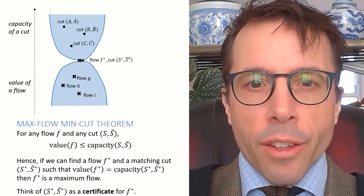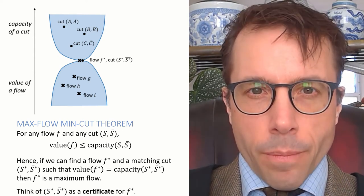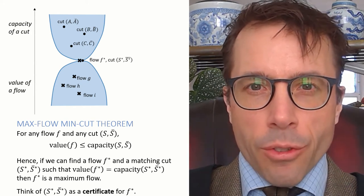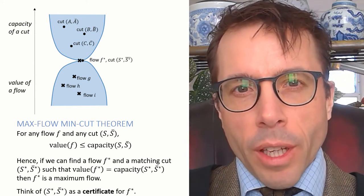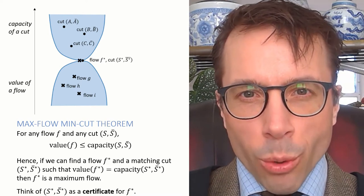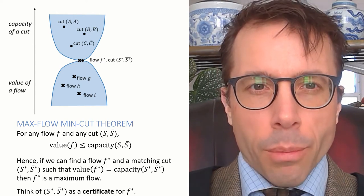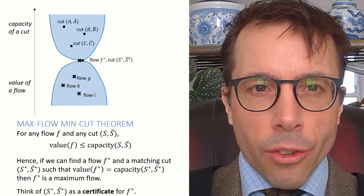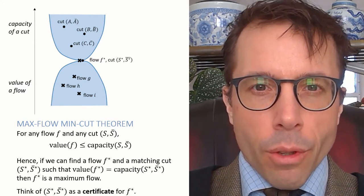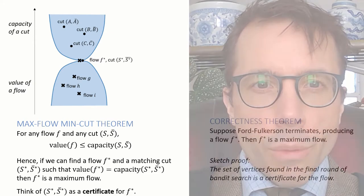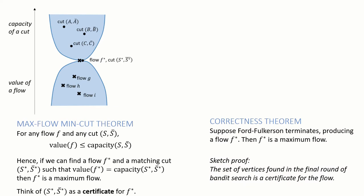I like to think of the cut S-star as a certificate. If I just told someone F-star and claimed it's a maximum flow, they might not believe me. But if I tell someone F-star and I also tell them S-star, then they can verify right away that F-star has to be a maximum. And that is exactly how we are going to prove that the Ford-Fulkerson algorithm is correct. We're going to pull out a cut, namely the set of vertices that the breadth-first search was able to reach. And we're going to say that this cut acts as a certificate that the final flow that the algorithm produces is a maximum flow.